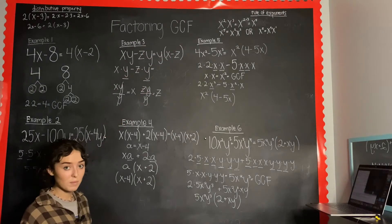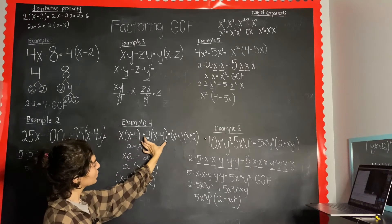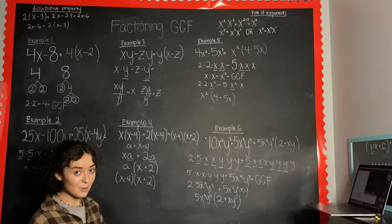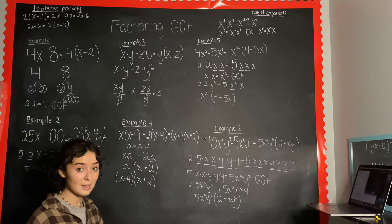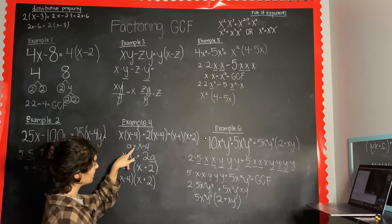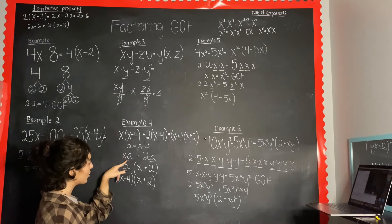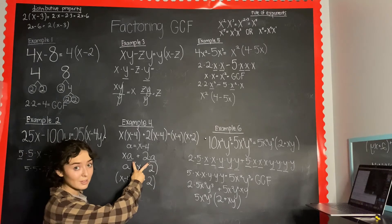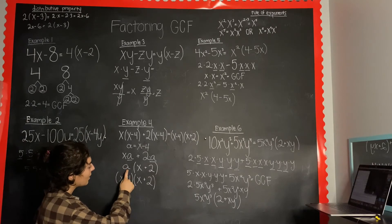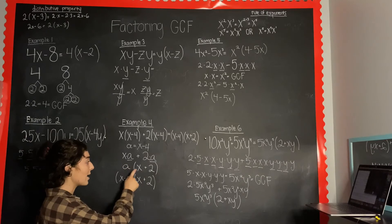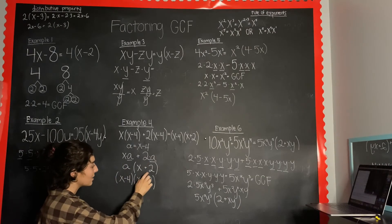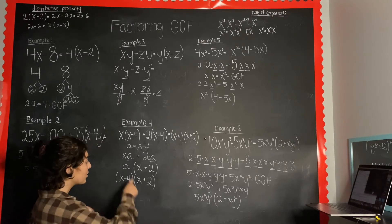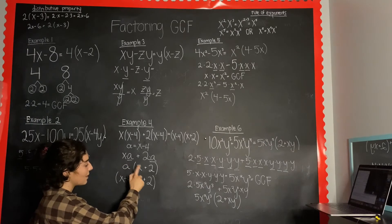This one's a little different. Right away I noticed that both terms have (x minus 4) in common. When you're given an expression like this you can substitute that expression for a variable to make the GCF easier to see. I set x minus 4 equal to a, and rewrote the expression as x times a plus 2 times a. Here you can see that a is the common factor, so it's the GCF. Pull it out: a times (x plus 2). You can verify by distributing a back to x and to 2.